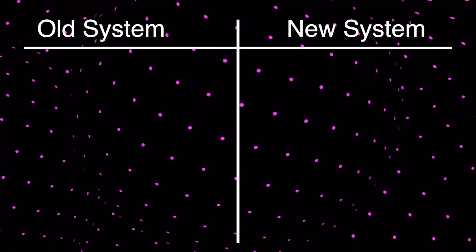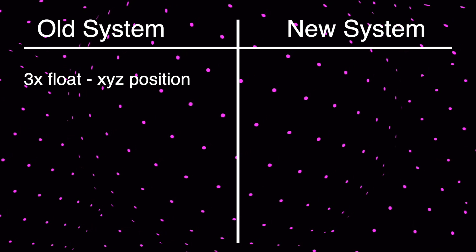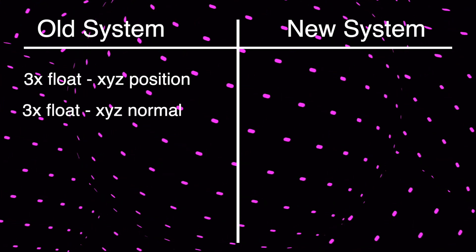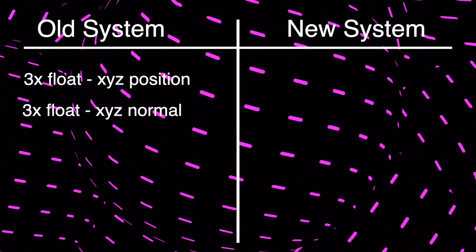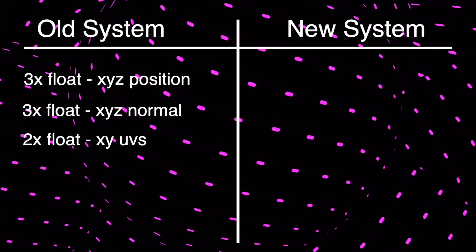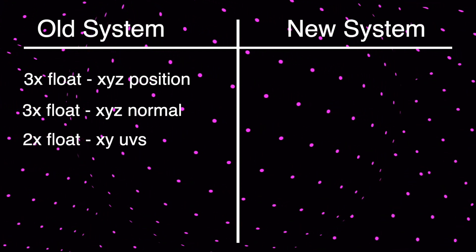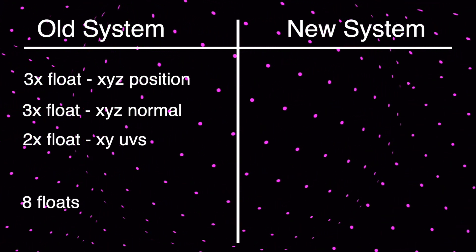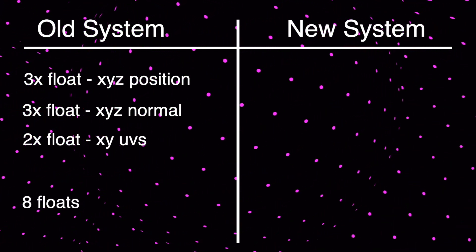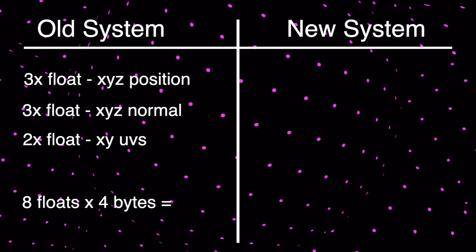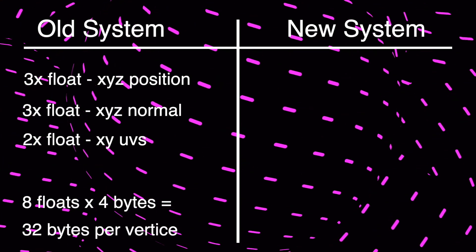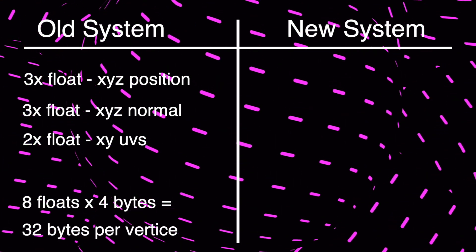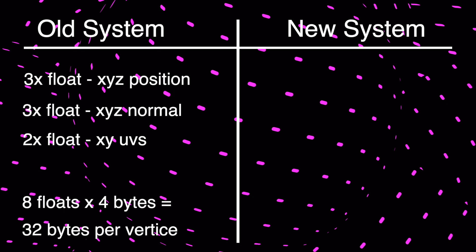So let's add that up. Each vertex defines three floats for x, y, and z position, three floats for x, y, and z normals, and two floats for texture UV coordinates. So that's eight floats in total, four bytes to define a single float, which comes to 32 bytes just to define a single vertex entry.